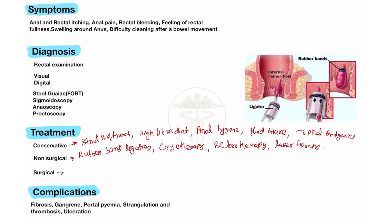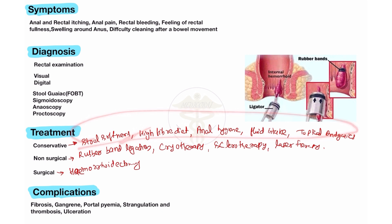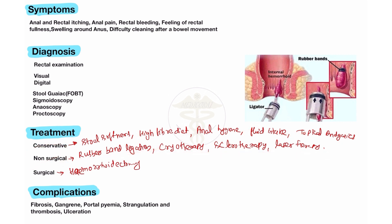The surgical method is hemorrhoidectomy — meaning removal of the hemorrhoid, whether internal or external. So the removal of hemorrhoid is the surgical method. To summarize the three treatment types: conservative uses stool softener, high fiber diet, anal hygiene, fluid intake, and topical analgesia; non-surgical uses rubber band ligation, cryotherapy, sclerotherapy, and laser therapy; surgical uses hemorrhoidectomy.